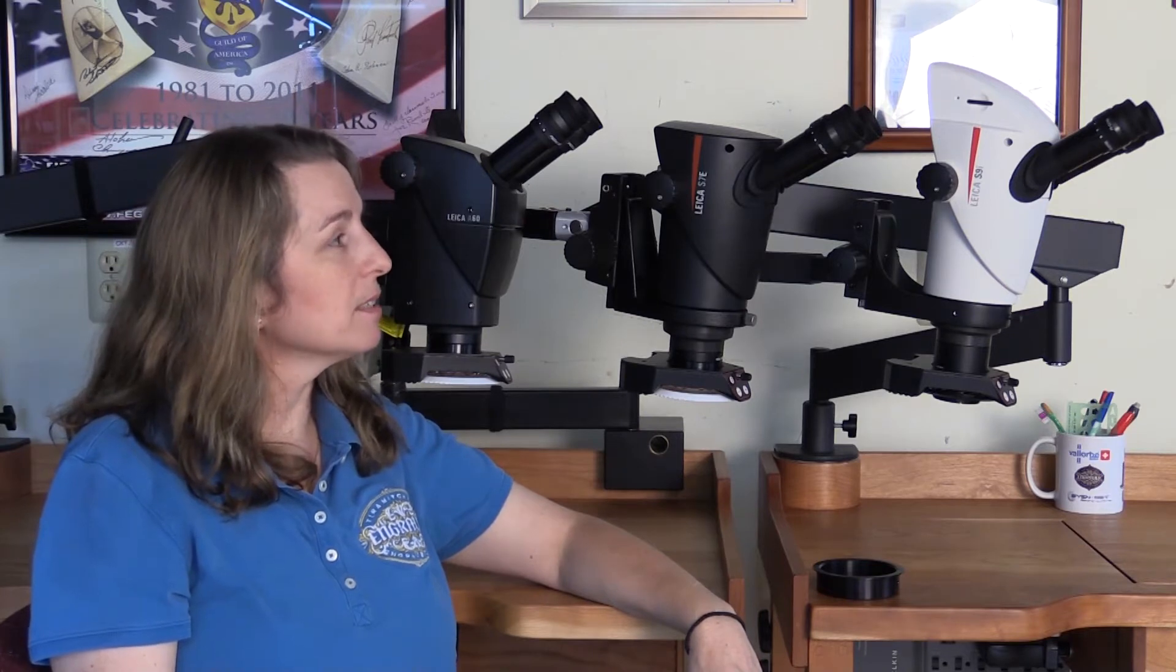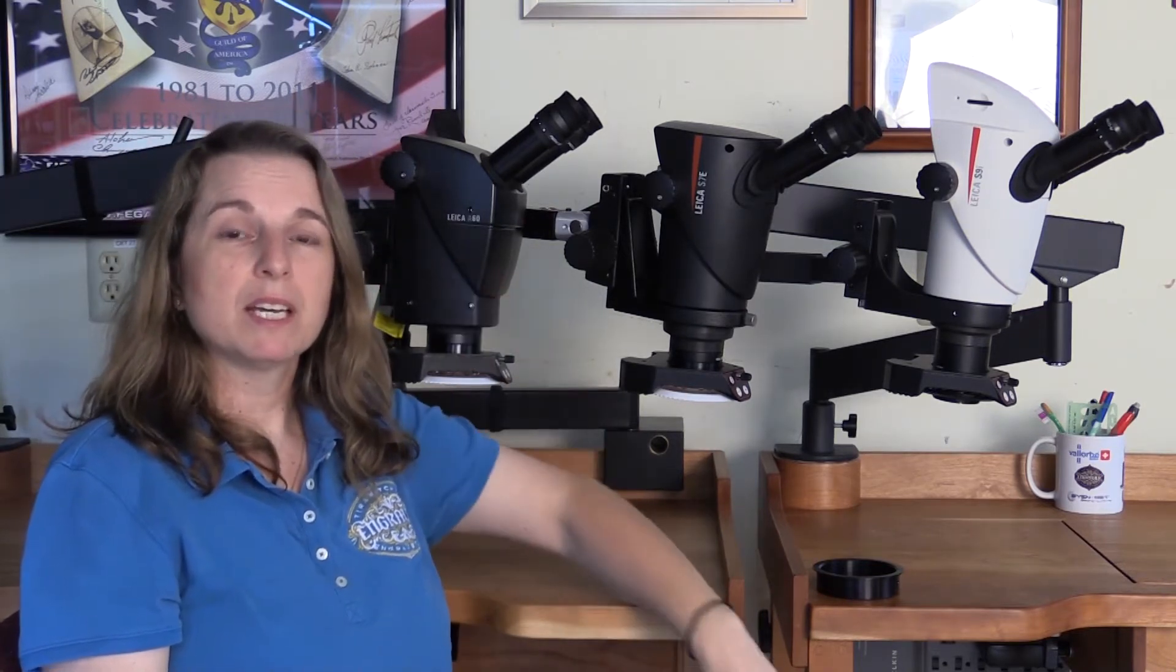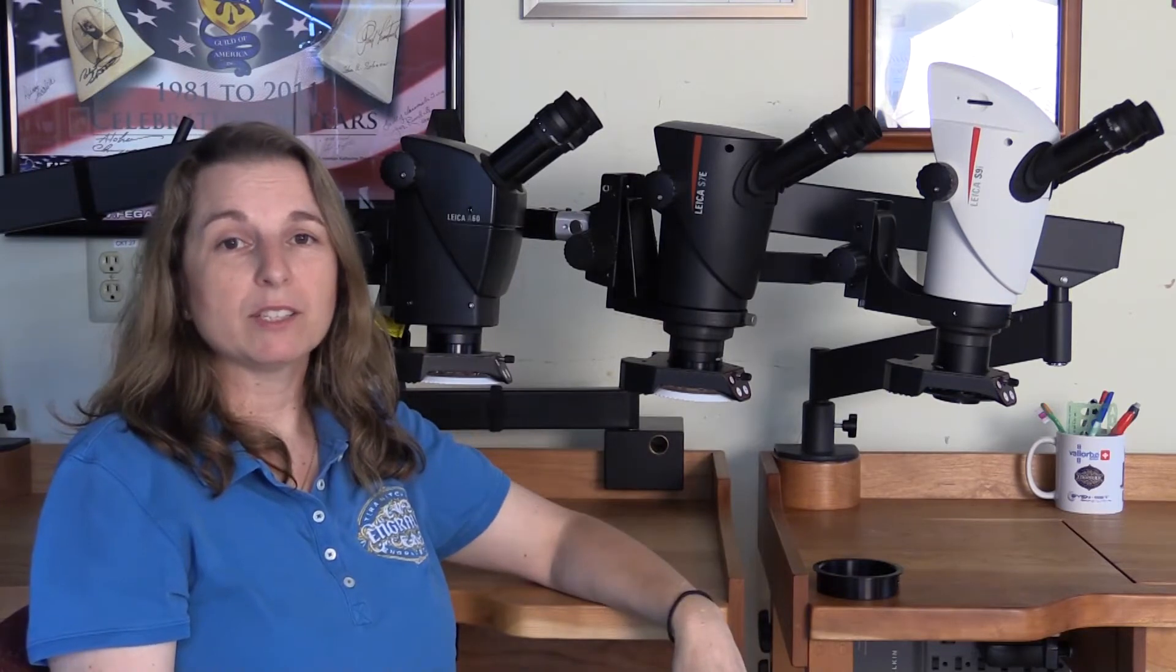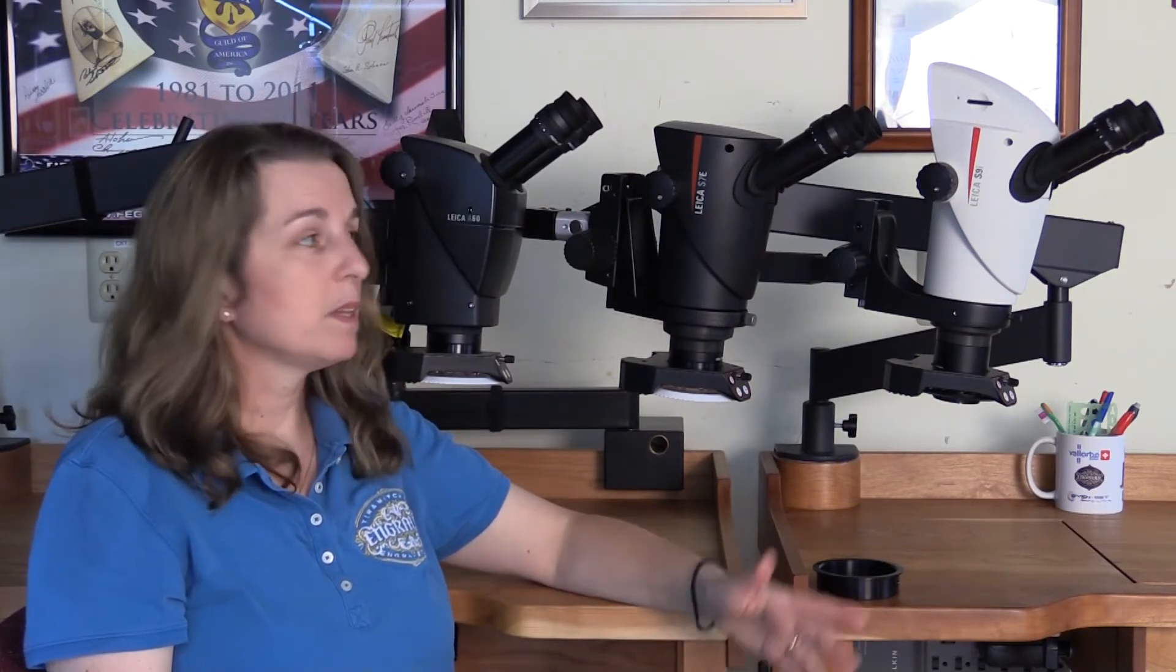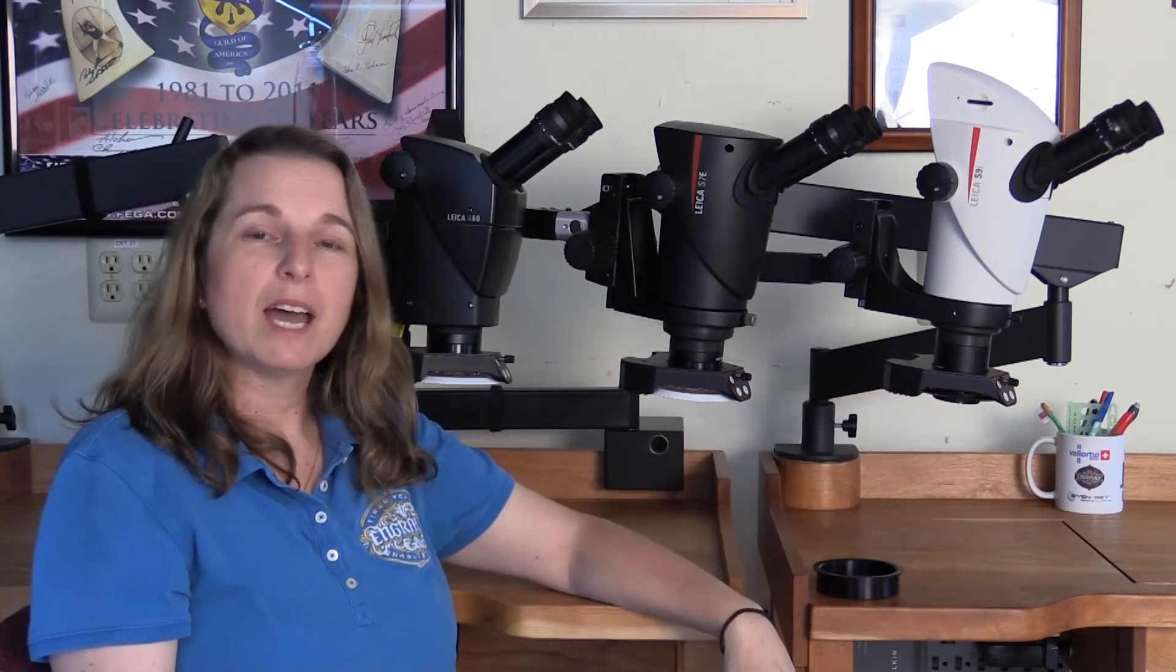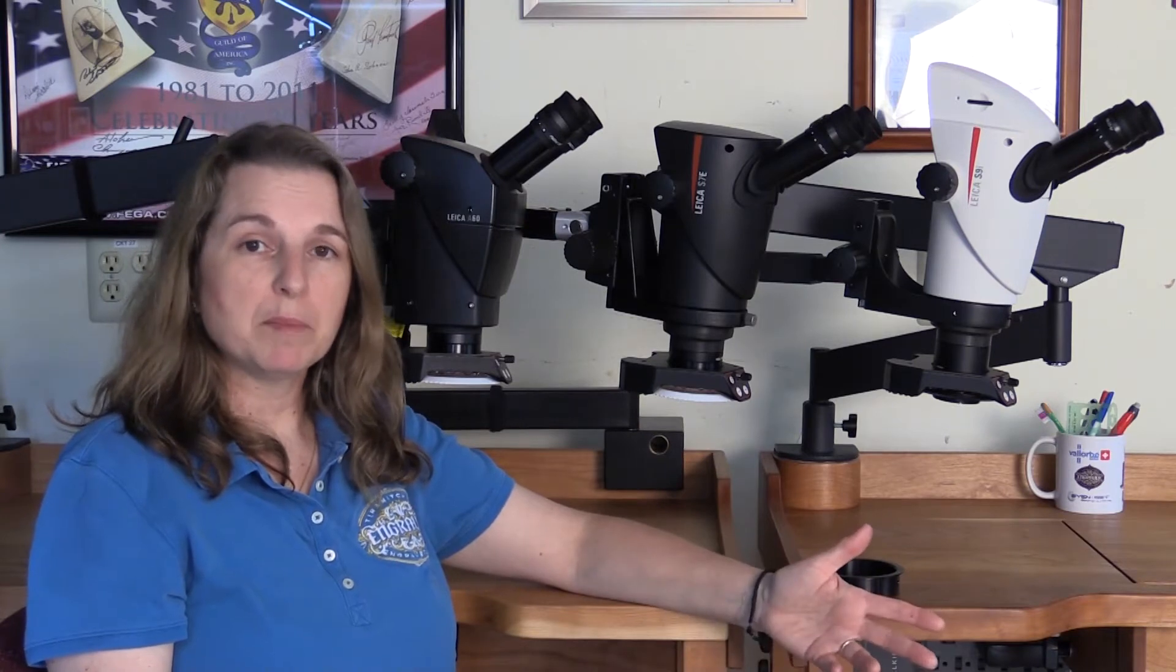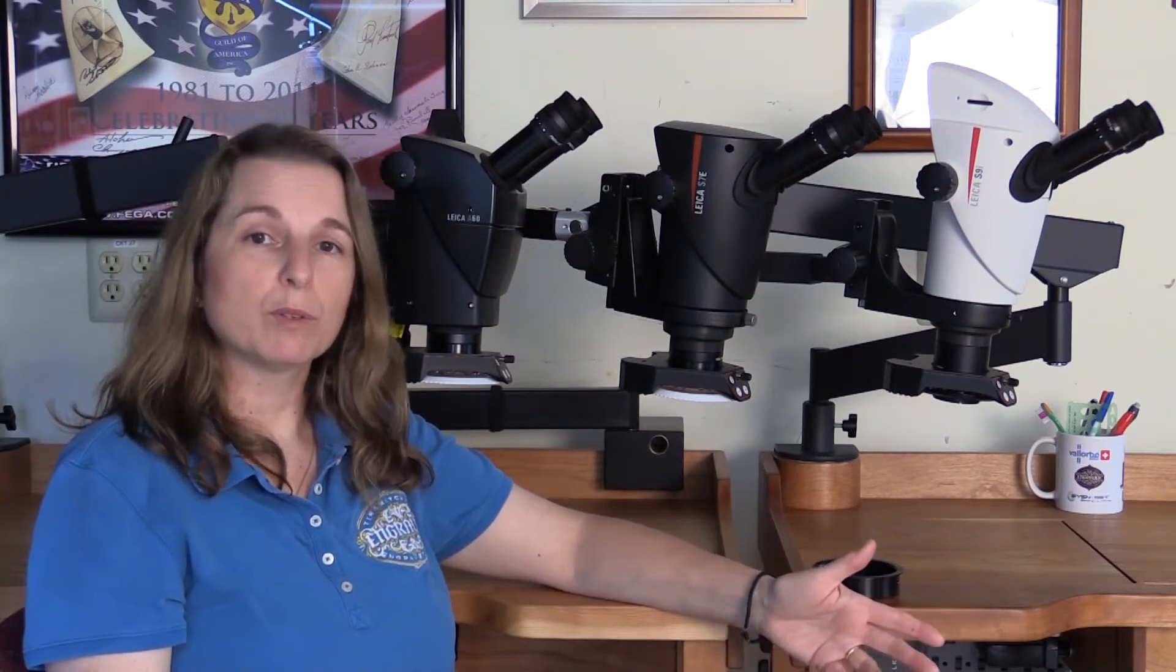For the eyepieces, the A60 has fixed eyepieces. That means they are permanently attached and come with the scope. The other two here, the S7 and the S9, have interchangeable eyepieces. So you can put different types of eyepieces in there and you have to order them separately.